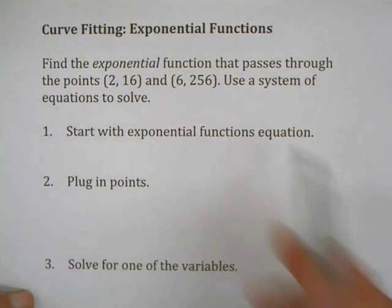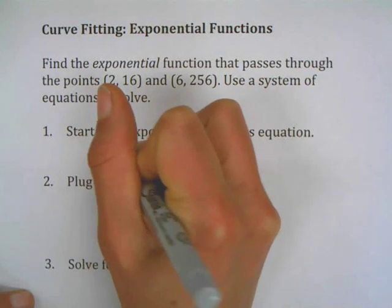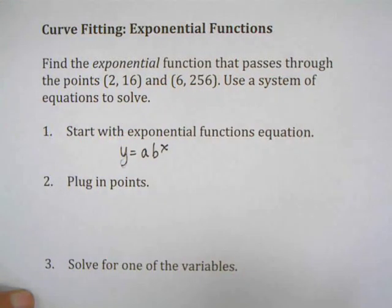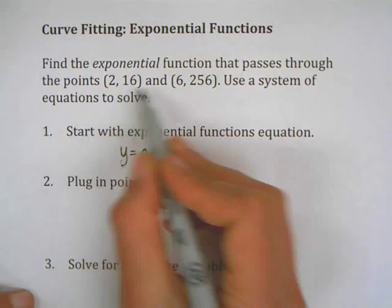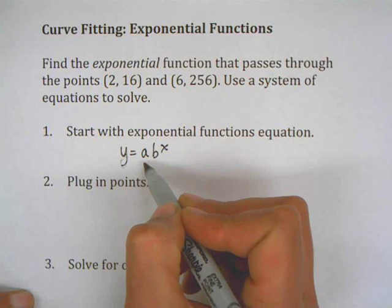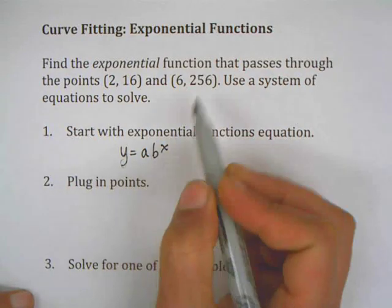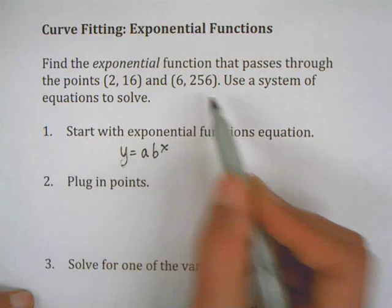First, you're going to start with a basic formula for an exponential function: y equals a b to the x. We're not given a point where x equals zero, otherwise we would have the a value, which is the y-intercept, so we're going to have to substitute these in.